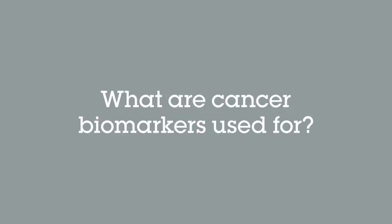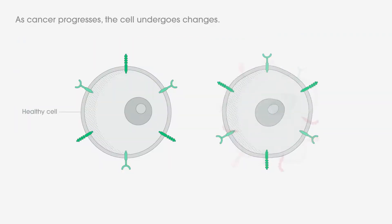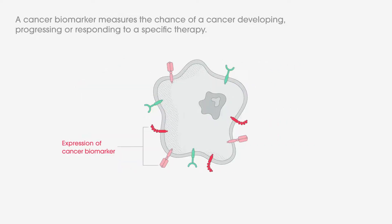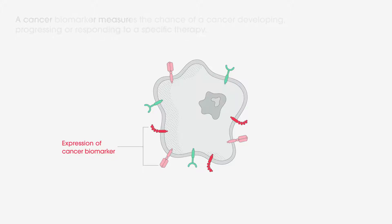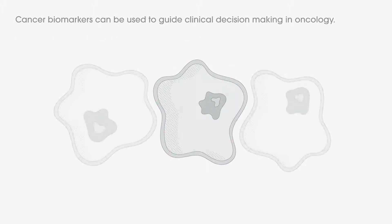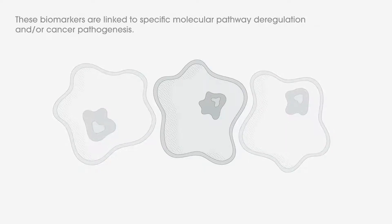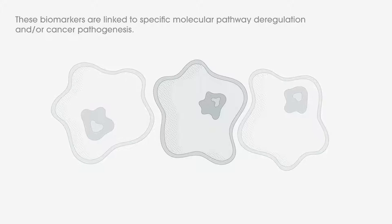What are cancer biomarkers used for? As cancer progresses, the cell undergoes changes. A cancer biomarker measures the risk of a cancer developing, progressing, or responding to a specific therapy. Cancer biomarkers can be used to guide clinical decision-making in oncology. These biomarkers are linked to specific molecular pathway deregulation and/or cancer pathogenesis.